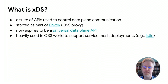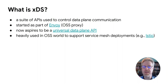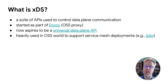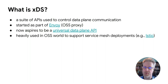Let's start with an introduction to XDS. XDS is a suite of APIs for configuring data plane behavior. In this context, a data plane is a piece of software that handles network traffic, such as a client, server, or proxy. The XDS API started as a way of configuring Envoy, which is a popular open source proxy. They were originally intended only for Envoy, but they're evolving to be more client agnostic. The goal is for XDS to be a general purpose API for configuring any data plane, whether that's Envoy, gRPC, or any other data plane.